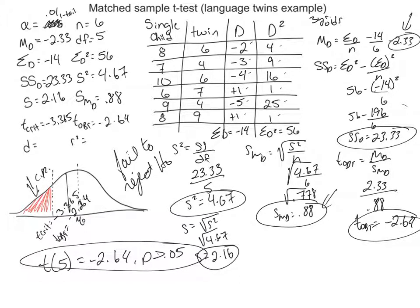It's hard being a researcher because if you set the alpha level too loose, you increase the probability of committing a Type 1 error. But here we set the alpha level too stringent at 0.01, and we might be missing a real effect — maybe single children do acquire language at a statistically significantly faster rate than twins. We just set that alpha too strict.